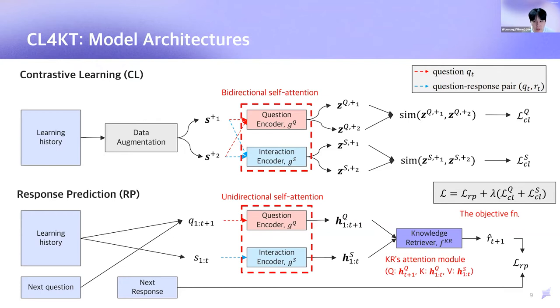For contrastive learning, as our pretext task, we employ bi-directional self-encoders to summarize the entire context of the learning history from both directions, which is similar to BERT4REC. For response prediction, our primary task, we use a causal mask to prevent positions from attending subsequent positions, as in the original transformer decoder, which also avoids future information leakage. For the knowledge retriever module, query, key, and values are the following, which is equivalent formulation to the typical knowledge tracing model, like deep knowledge tracing, something like that.